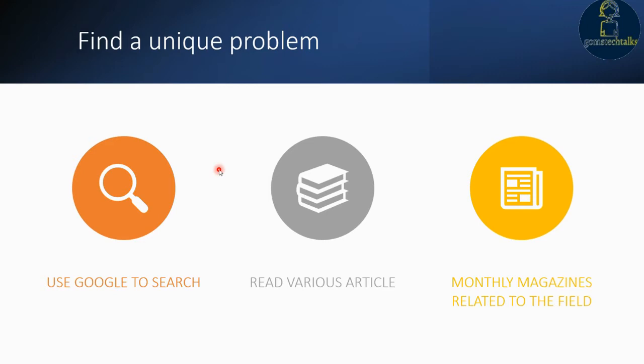So what is your unique problem? You have to use Google to search for it. For example, if diabetes and cancer are already covered, you might think of COVID — but if you search and find active research already going on for that disease prediction, you have to drop it and search for another unique disease.